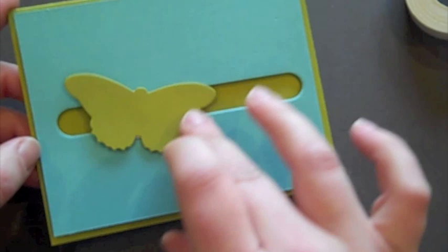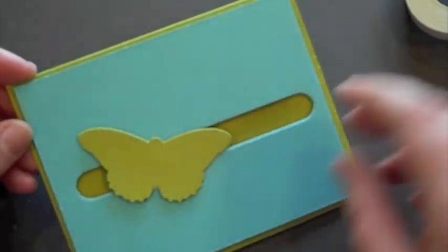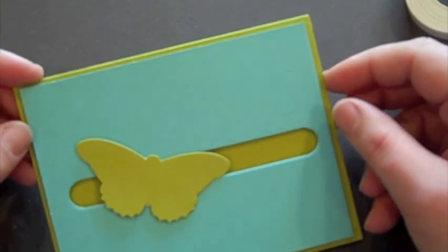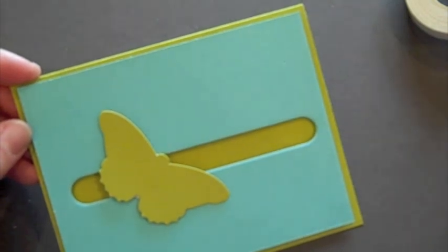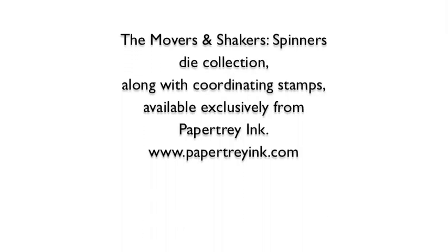And just imagine all the different images that you could place on this. I'm thinking balls, cars, all kinds of different things that could spin and slide. And that wraps it up for movers and shakers spinners.